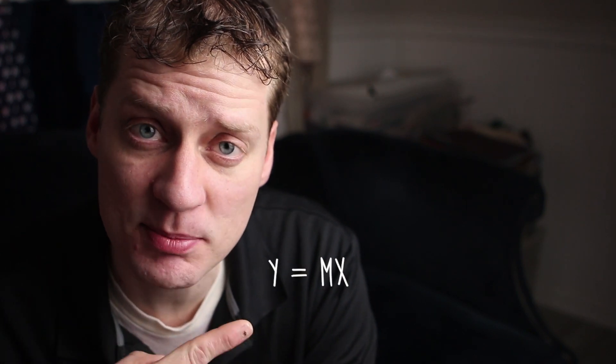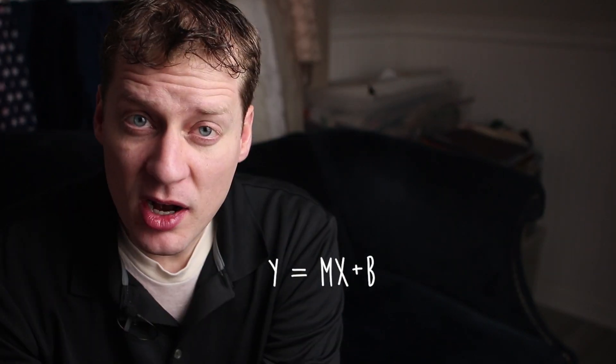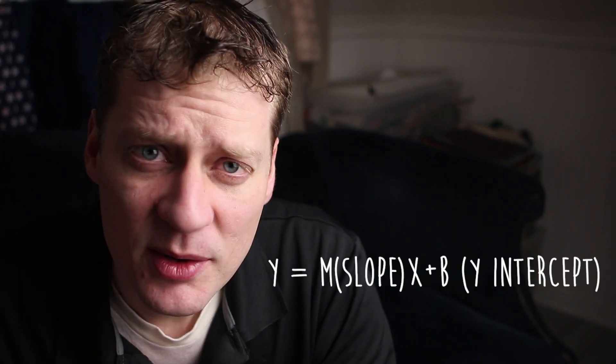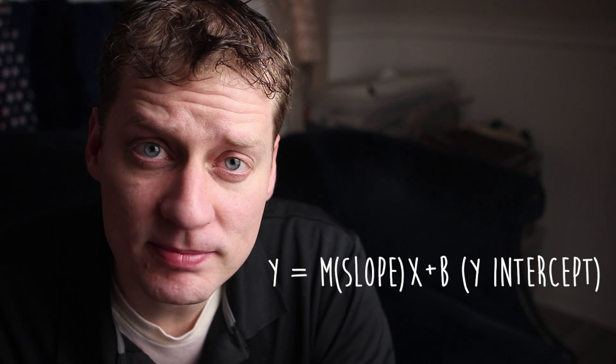Estimates round number three: bivariate estimates. Remember in algebra we had an equation. A lot of you saw it as y is equal to mx plus b. We called b the y-intercept and we called m the slope.